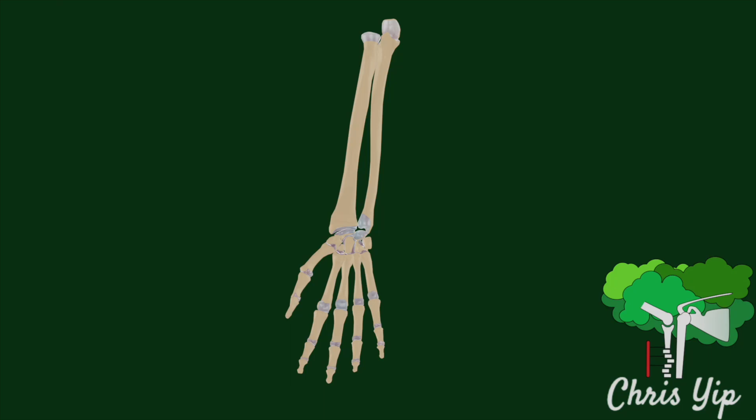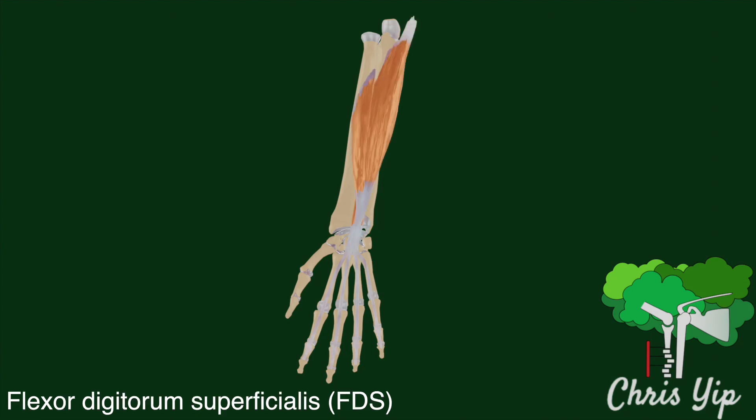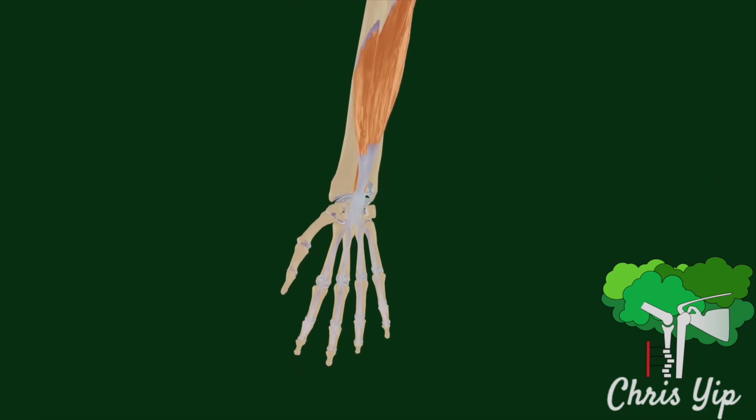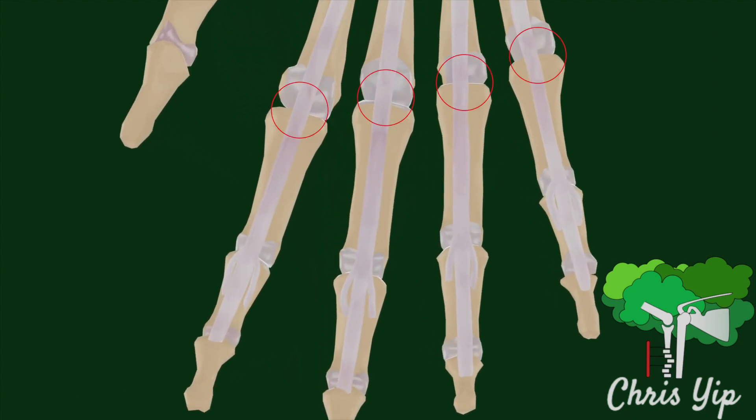Two bundles of muscle allow us to flex our digits: the flexor digitorum profundus and the flexor digitorum superficialis. Up until the metacarpophalangeal joint, the tendons from the two muscles are encased in a common synovial sheath.